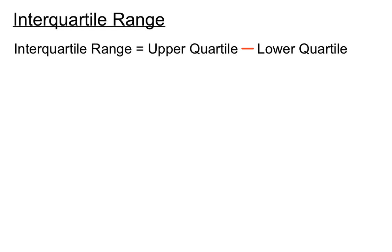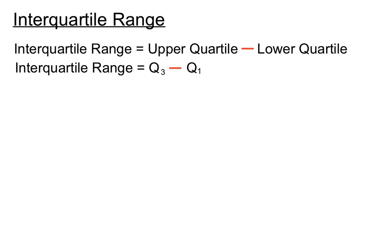The interquartile range is the difference between the upper quartile and the lowest quartile, so there's a subtraction of two items. I'll explain what an upper quartile and a lower quartile is. That's expressed as Q3 minus Q1.